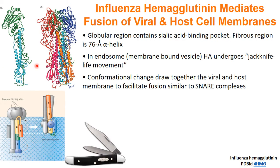Here is the structure of HA. It has a globular region with a binding site for sialic acid, which is part of a glycoprotein. So basically HA is looking for sialic acid to bind, so it knows it's at the right cell. It also has a fibrous portion, which is a 76-angstrom alpha helix. In the endosome, HA will go through a jackknife-like motion.